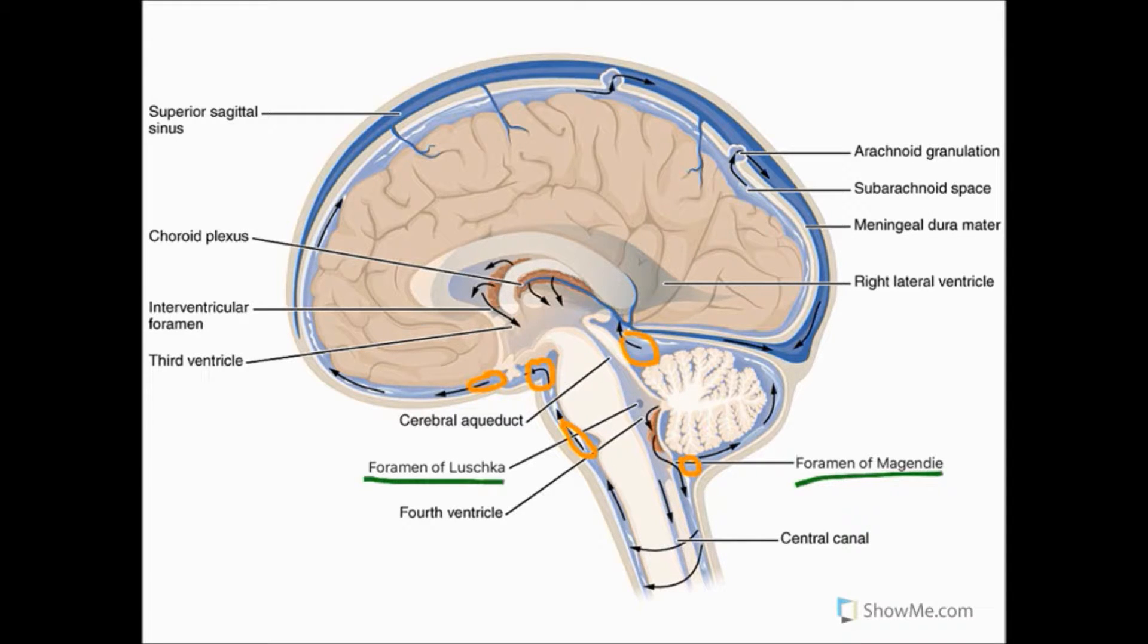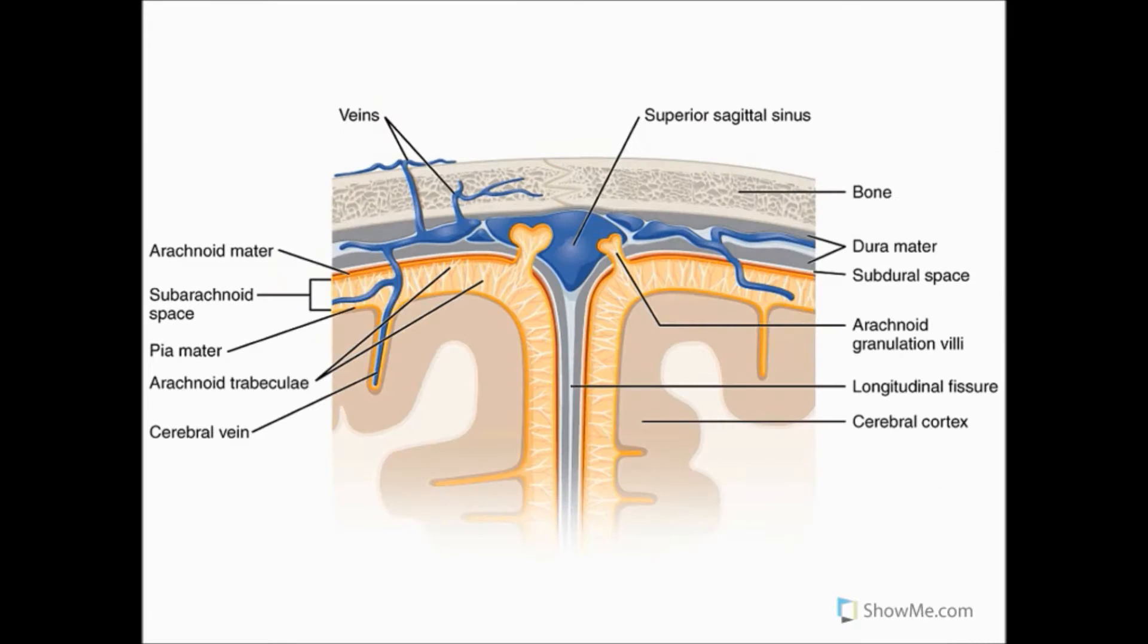Once the CSF has left the fourth ventricle via these three small foramina into the subarachnoid space, the CSF can flow around the spinal cord and the brain before being reabsorbed by arachnoid granulations. Arachnoid granulations are small protrusions of the arachnoid membrane through the dura into the venous sinuses, the largest of which are found in the superior sagittal sinus.